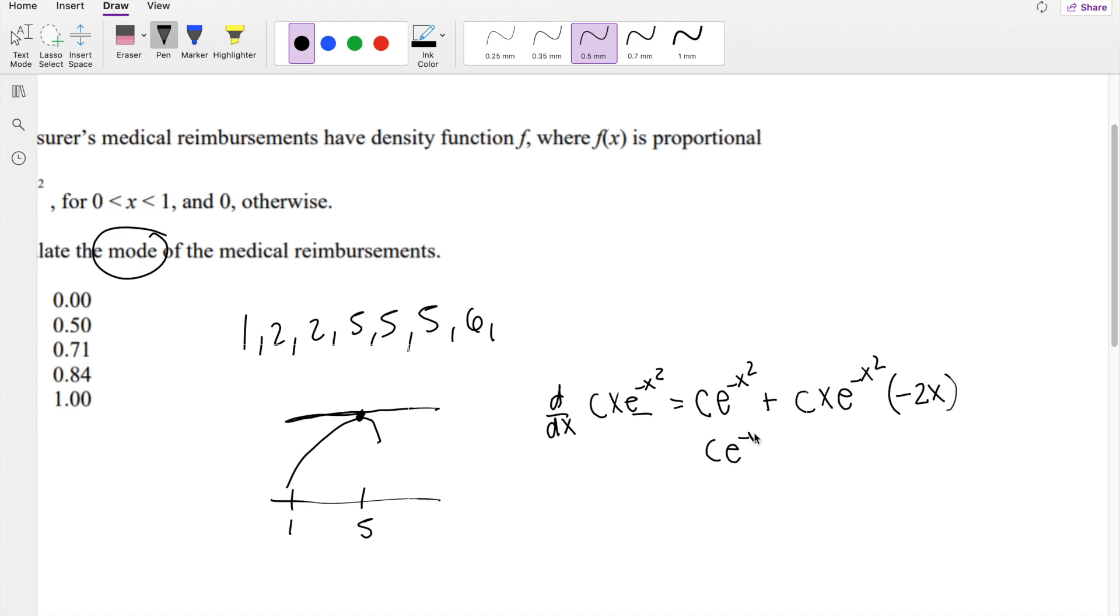when I factor out Ce^(-x²), you get 1 plus -2x². Do you agree? I think so too.